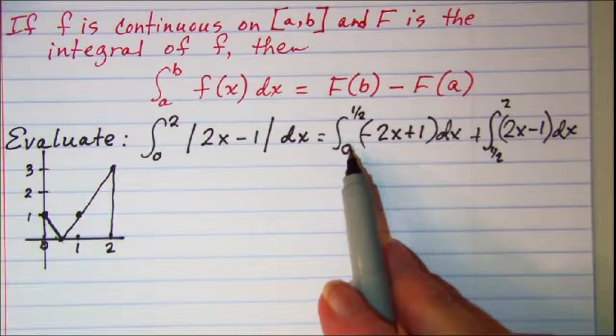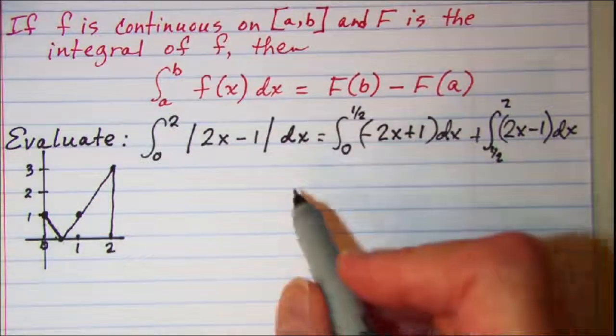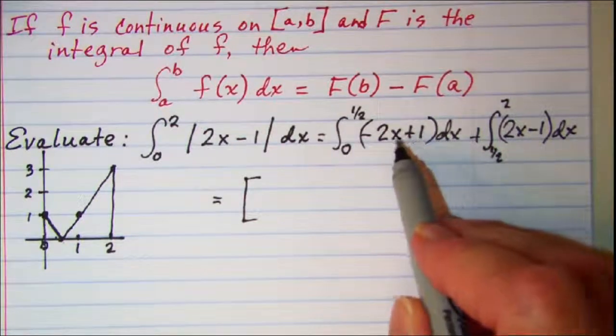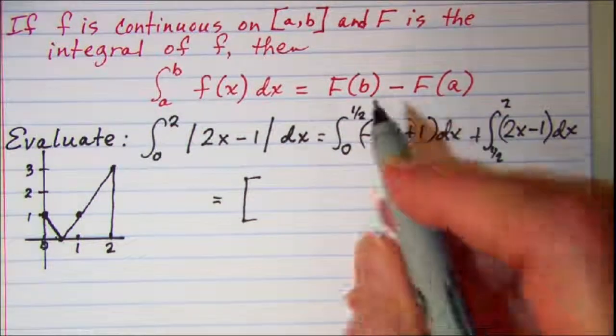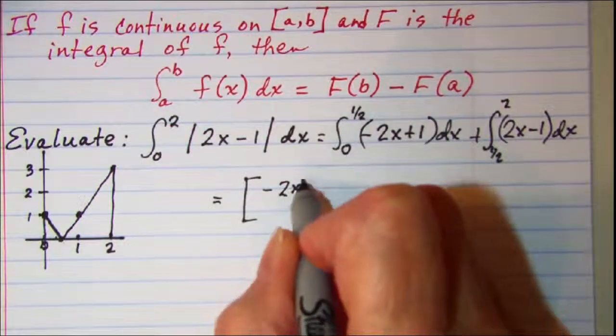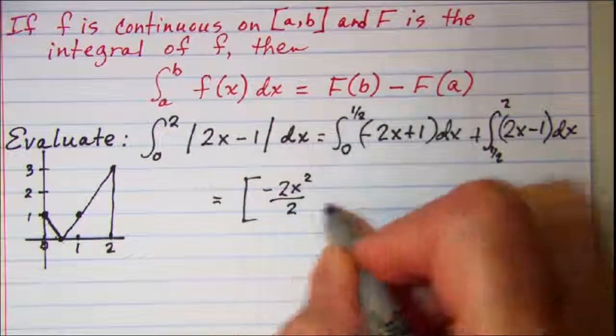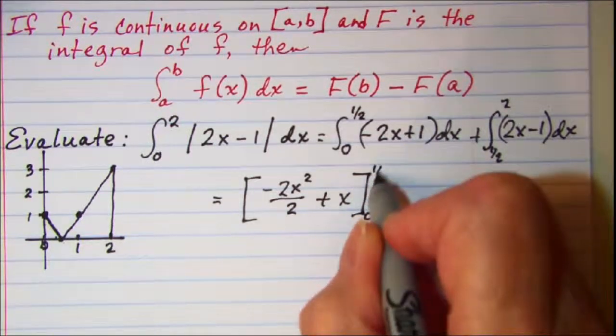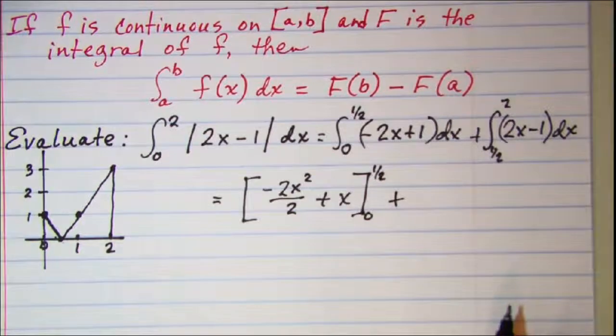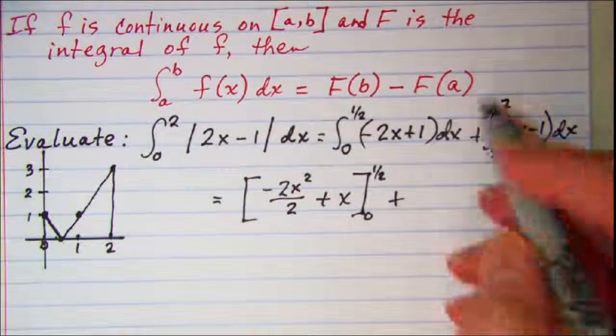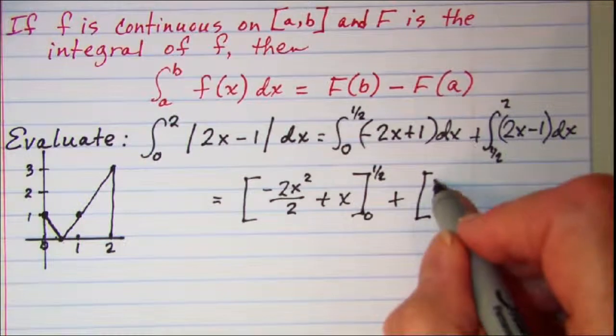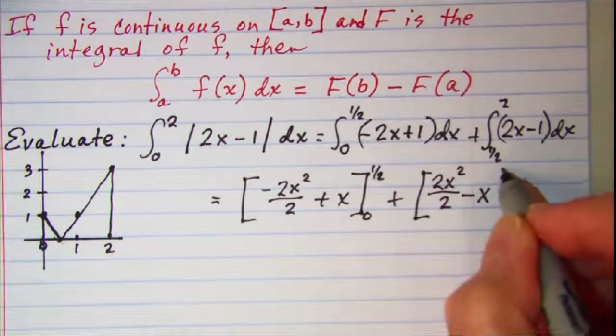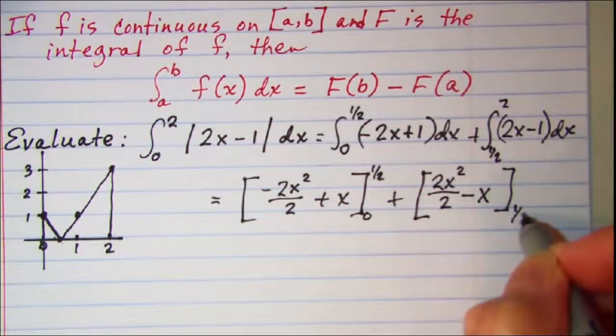Alright, so let's do these two pieces separately. We know that this expression will be negative 2x squared divided by 2 plus x, evaluated from 0 to 1/2. And then we're adding to that this one, which is 2x squared divided by 2 minus x, evaluated from 1/2 to 2.